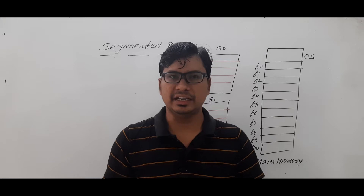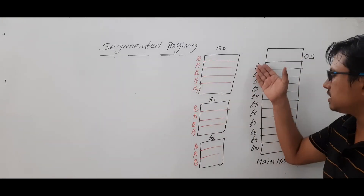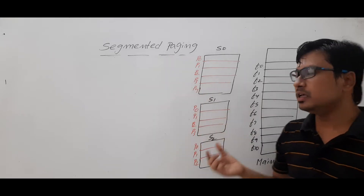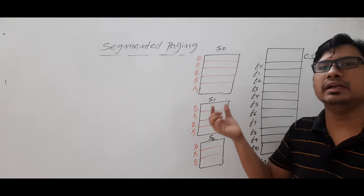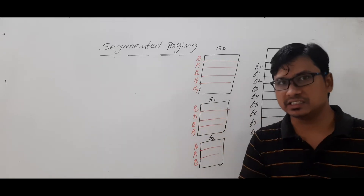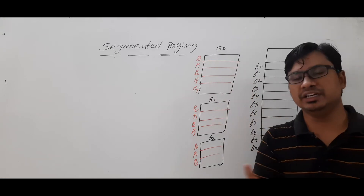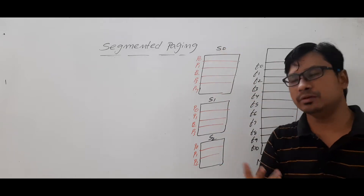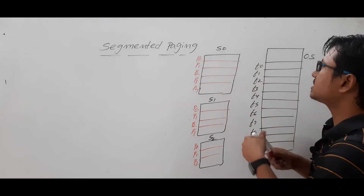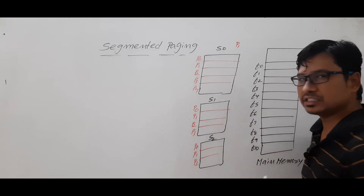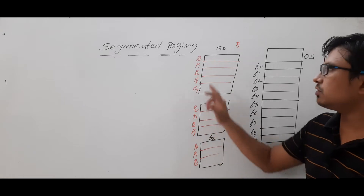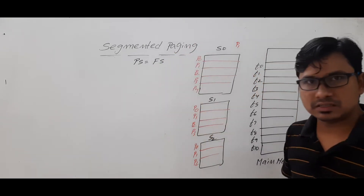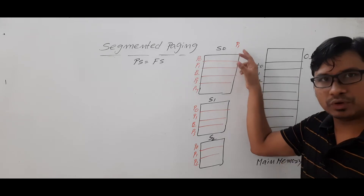In segmented paging, the main memory is logically divided into frames and the process is divided into segments. In paging, the main memory is divided into frames and the process is divided into pages. In segmentation, the main memory and the process are logically divided into segments. But in segmented paging, the process is divided into segments and main memory is divided into frames. Each segment will be divided into pages, and page size will be equal to frame size.